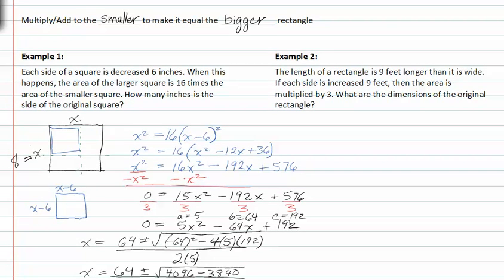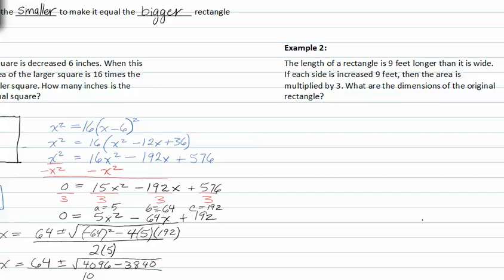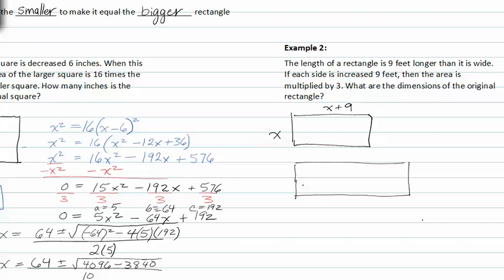Moving on to example two. The length of a rectangle is nine feet longer than it is wide. So here's my rectangle — if this is the width, then this has to be the length. If each side is increased by nine feet, then the area is multiplied by three. So for the larger rectangle, we have x plus nine plus nine, and x plus nine, because it says it's increased by nine feet.